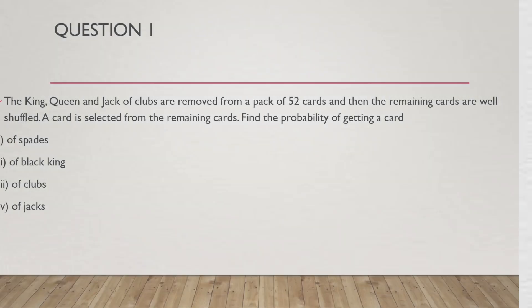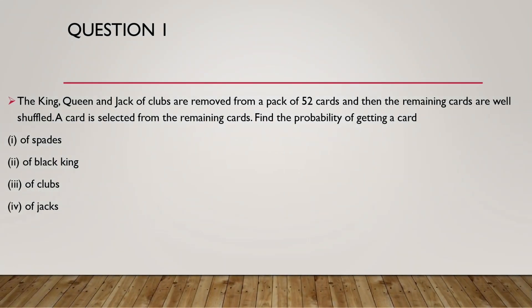Question 1. The king, queen and jack of clubs are removed from a pack of 52 cards and then the remaining cards are well shuffled. A card is selected from the remaining cards. Find the probability of getting: a) ace of spades, b) a black king, c) a club, d) a jack.